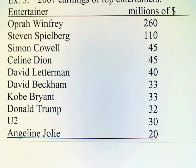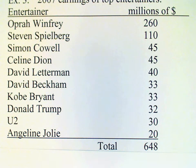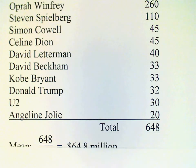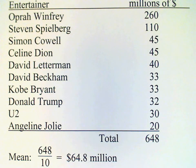To calculate the mean of this data set, we simply add up those values and we get 648 million. There are 10 entertainers, so we divide that number by 10 and we get the mean value of 64.8 million as a summary of this data set.